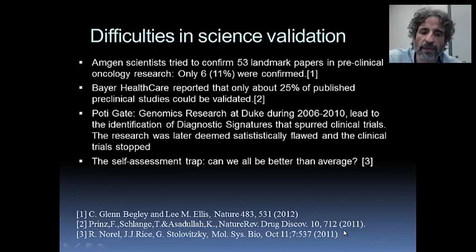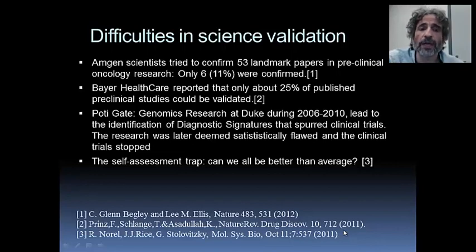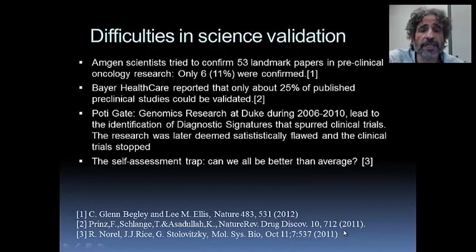Very sadly, only 6 out of 53 — that is 11% of them — were reproduced. That means the scientists at Amgen were able to reproduce only 11% of those results taken as correct in the scientific literature. This is alarming. It was not an isolated case: another company, Bayer Healthcare, reported that only 25% of published preclinical studies they tried to reproduce could actually be reproduced.